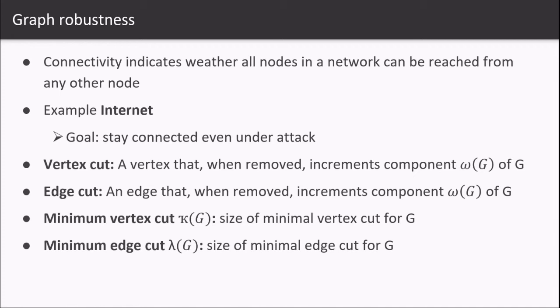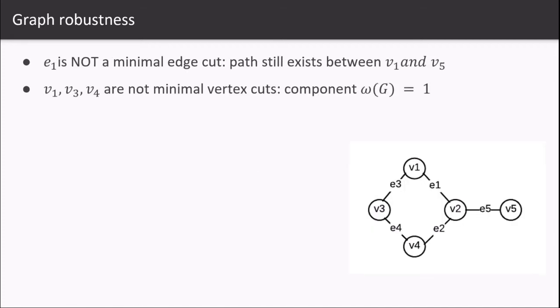Let us understand these cuts, including minimum vertex cuts and edge cuts, in the next example. Here in the graph on the right, e7 is not the minimal edge cut because the path still exists between v1 and v5.